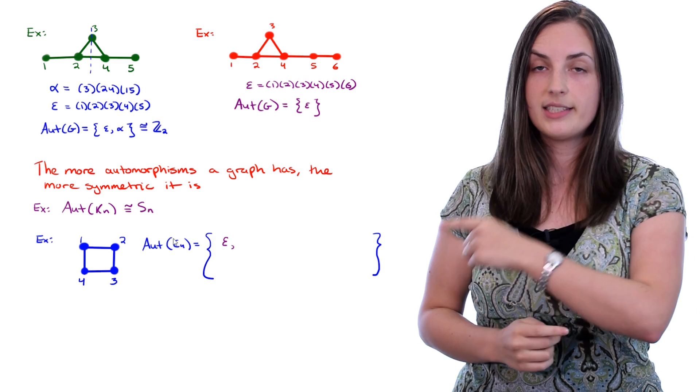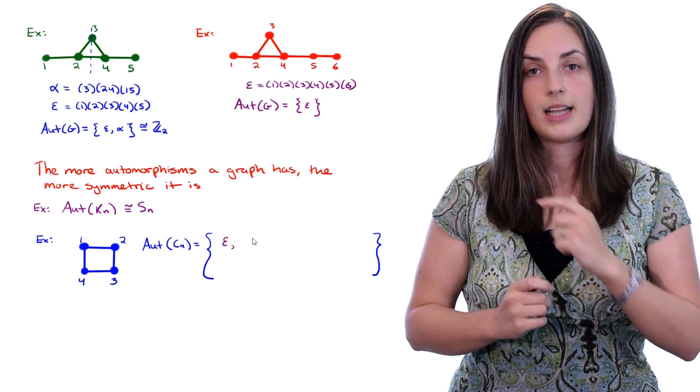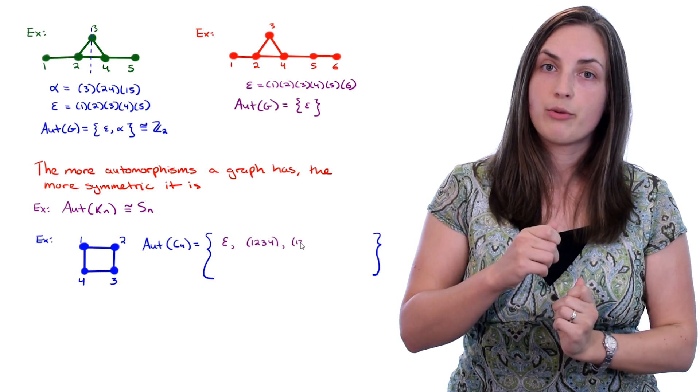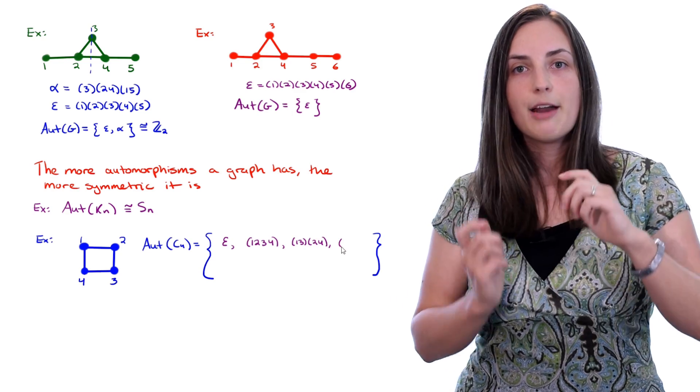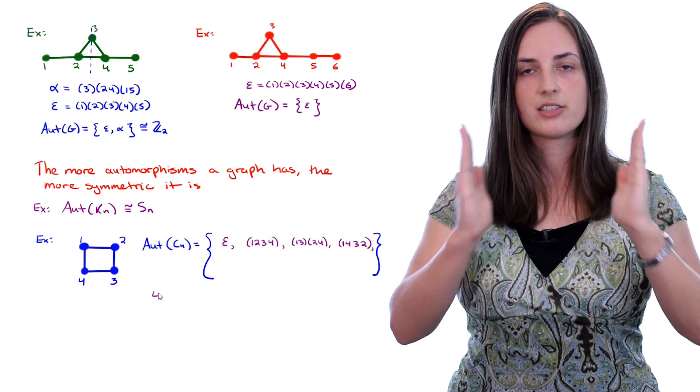So we'll start by writing down the identity, and then we write down the 90 degree rotation, that's that map, then the 180 degree rotation, that map, and finally the 270 degree rotation, that map. Okay, that gives us our four rotations.